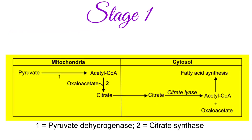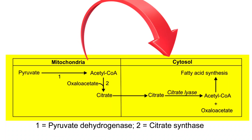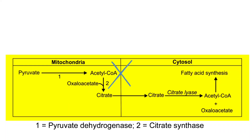De novo synthesis takes place in the cytosol. But acetyl-CoA, which is the starting material, is formed in the mitochondria from pyruvate, so it must be transported to the cytosol. However, acetyl-CoA cannot cross the mitochondrial membrane as such. To overcome this, acetyl-CoA crosses in the form of citrate — acetyl-CoA and oxaloacetate condense to form citrate, which is transported into the cytosol by citrate translocase. Once in the cytosol, citrate is cleaved back to acetyl-CoA and oxaloacetate by citrate lyase.